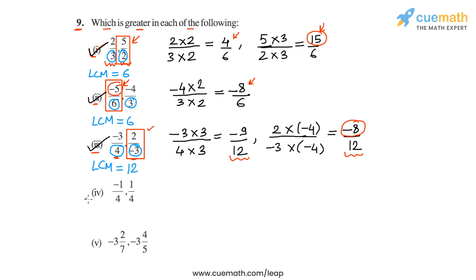Then in part 4, we have to compare -1/4 and 1/4. The first one is negative and the second one is positive, so we can directly say that the second rational number, 1/4, will be greater. So without any calculation, we can say that 1/4 is greater in part 4.